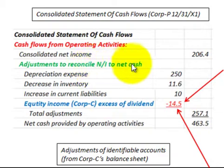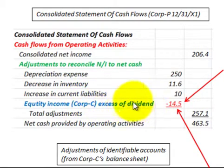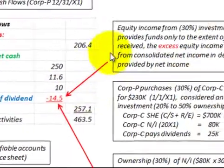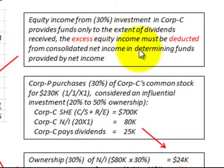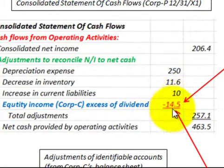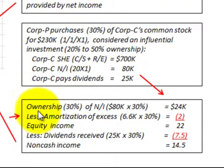We're looking at operating activities using the indirect method on the consolidated statement of cash flows, so we have to adjust net income to a net cash basis. The key item is this equity income from corporation C. The equity income from the 30 percent investment in corporation C provides funds only to the extent of the dividends received. The excess equity income must be deducted from consolidated net income in determining the funds provided by net income.